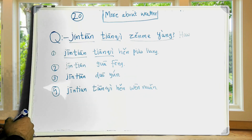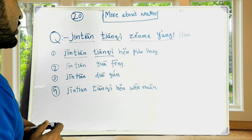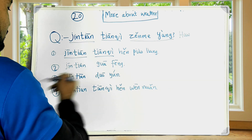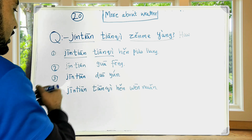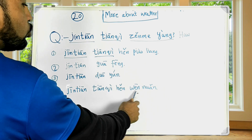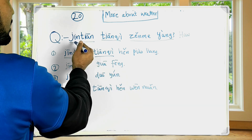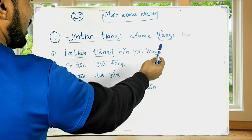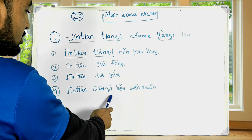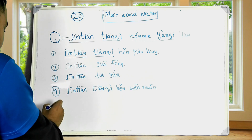How's the weather today? The weather today is very warm — 今天天气很温暖. And the last one: how's the weather today?